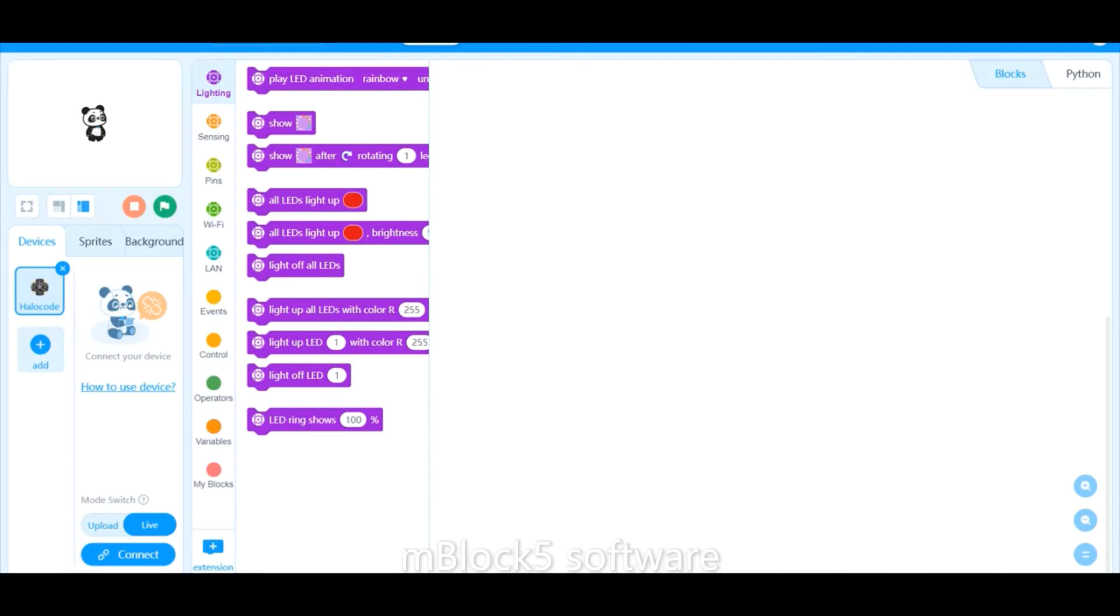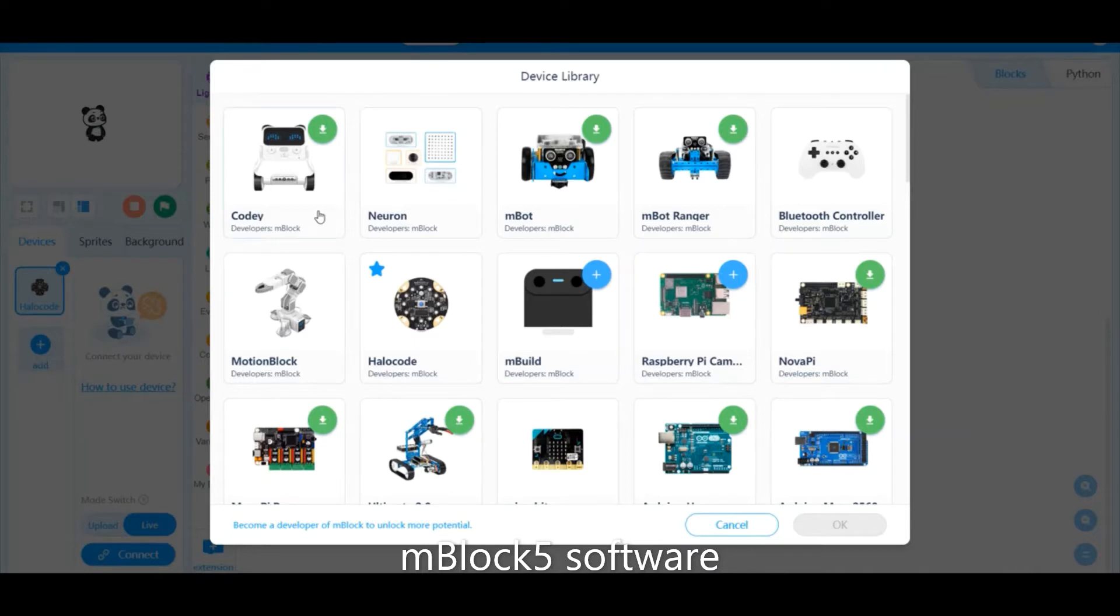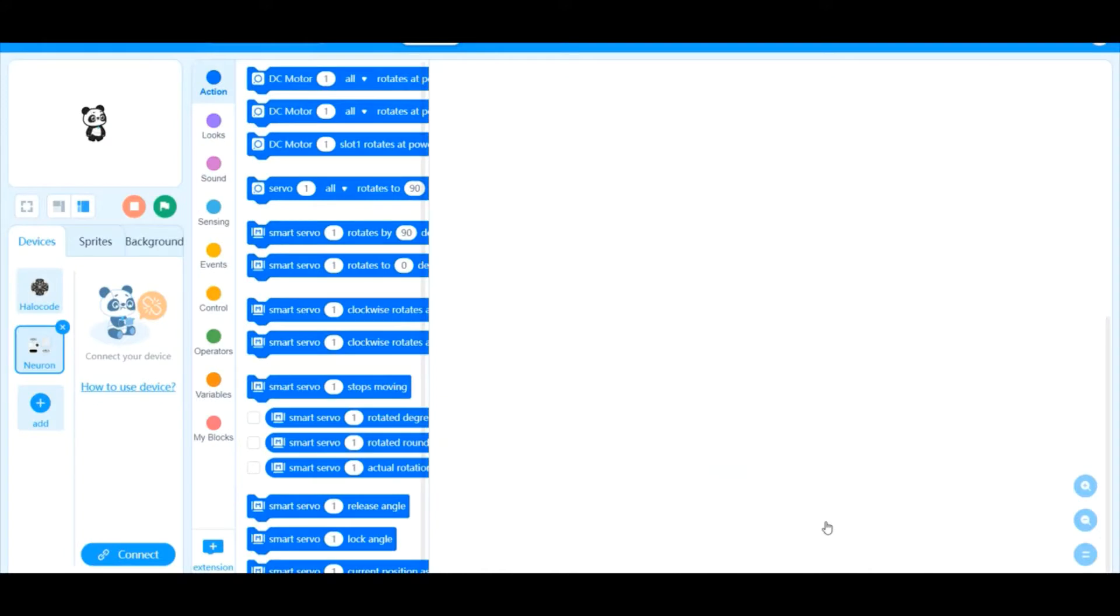So I'm using the M block 5 software. This is how it looks like. To work with the neurons, I need to add under the device category the neurons. So I click on plus button, look for the neuron and once I select the neuron as device, it also changes the software blocks which is available for me to create my program.